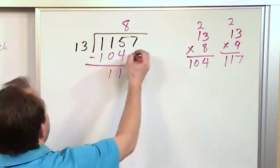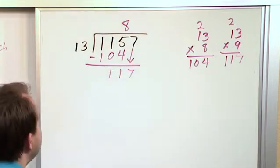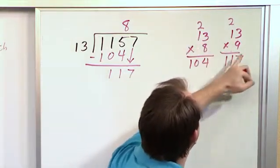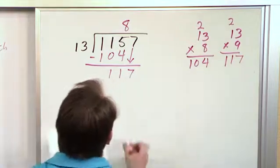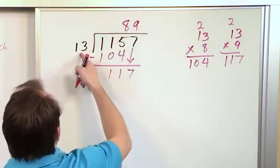After we do that subtraction, we reach up and grab the next digit, and it's 117 now. Look at what we have here. In the course of doing this, we actually figured out that 13 times 9 was 117. So 13 can go into this actually 9 times. We multiply.